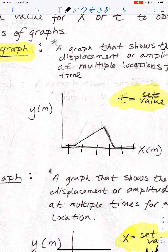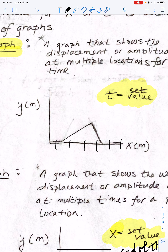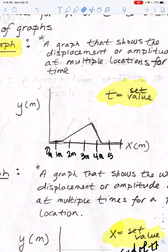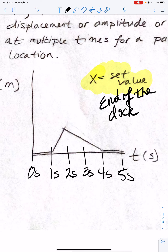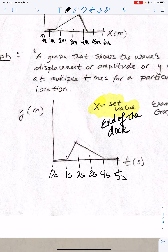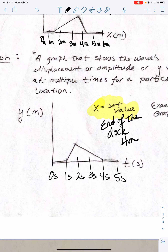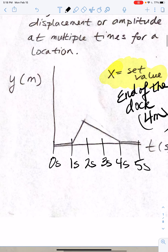On the snapshot graph, you took a picture of the water — maybe at the shore that's zero meters, one meter out, two meters out the wave looks like this, three meters out it looks like that, four meters out — so we set a time value by taking a picture. Maybe this time value is set at two seconds; at two seconds we took a picture and the water wave looked like that at different distances. On the history graph, we set a location — maybe the end of the dock is four meters out — and this is what happens as time goes by: zero, one, two, three, four, five seconds, and so on.